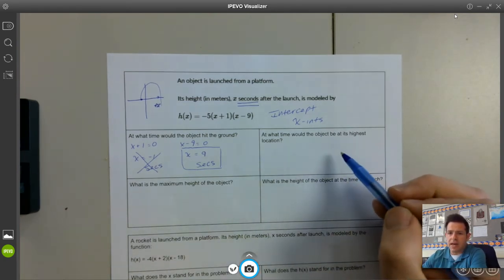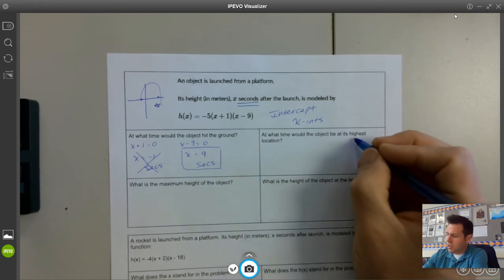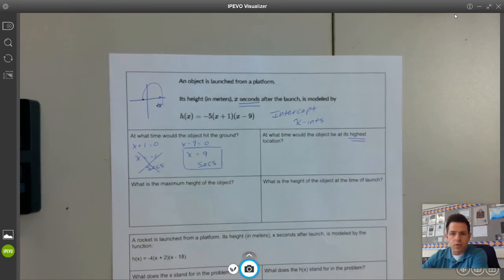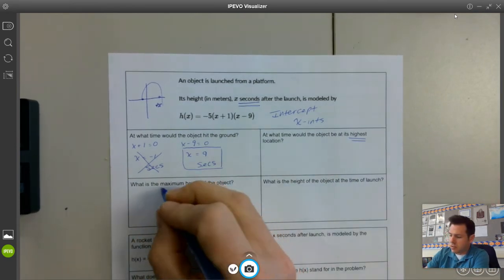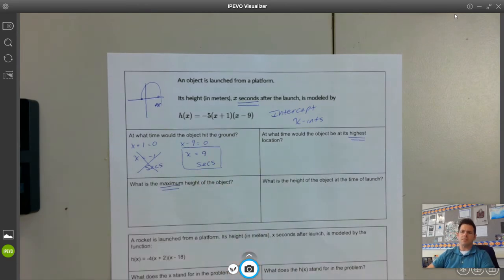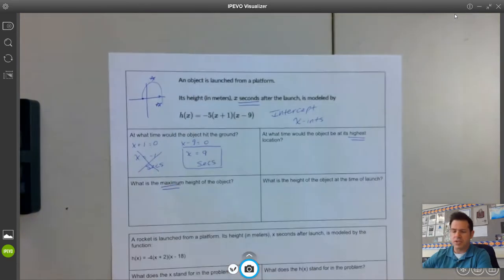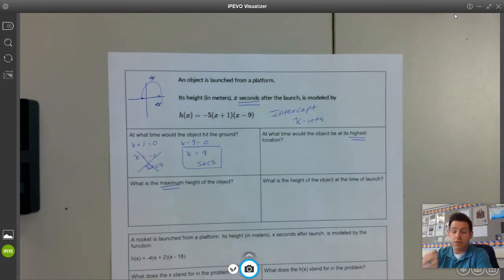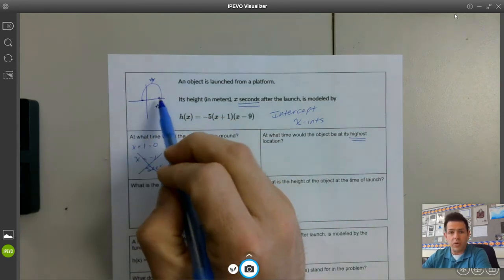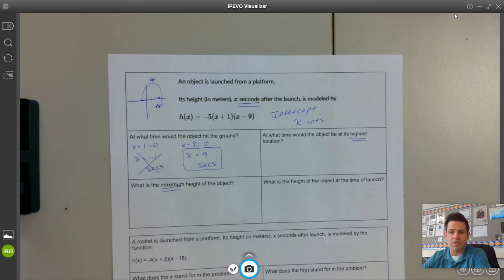At what time would the object be at its highest location? This spot right here. We see the word highest. Later on we're going to see the word maximum. These are talking about our maximum, minimum. So again, if we had a picture of this on the graph, you can always get on Desmos. We did that a little bit before the Easter break. We want to find the X value for the axis of symmetry. That would be the middle point in between the intercepts. So there's a couple different ways to do this.